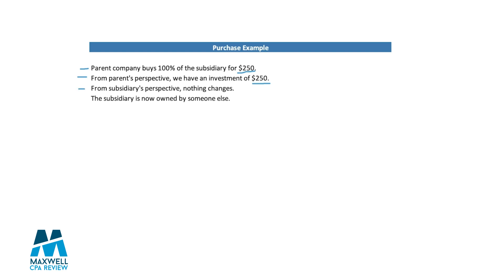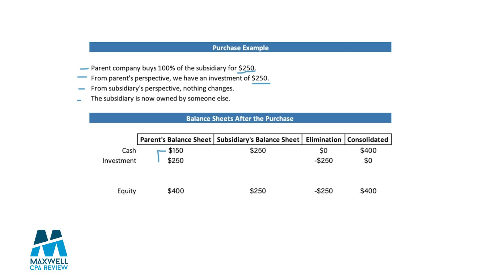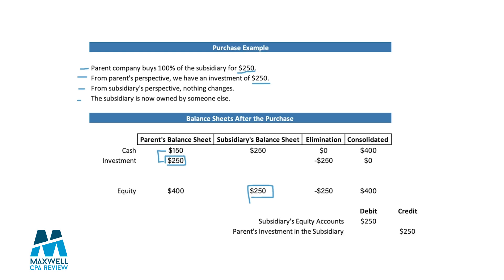From the subsidiary's perspective, nothing changes — there's no initial journal entry. It's simply that the subsidiary is now owned by the parent company instead of by the external owners. After the purchase, the parent company has an investment of $250, and nothing changed on the subsidiary's balance sheet. At year end, we make the consolidating entry: we debit the subsidiary's equity of $250 and credit the parent's investment in the subsidiary for $250, because we cannot own ourselves or have equity in ourselves. The consolidated equity is $400 and consolidated cash is $400, which shows up in the consolidated financial statements.